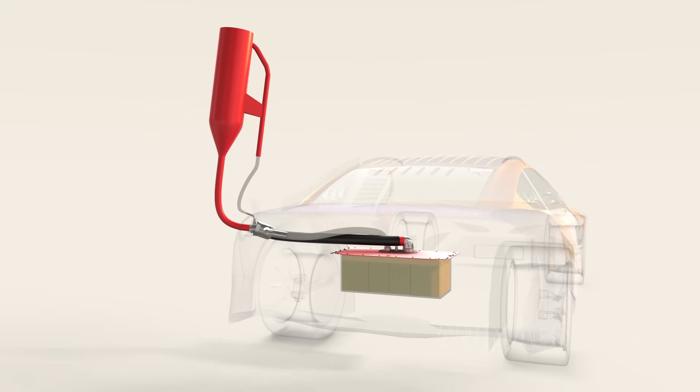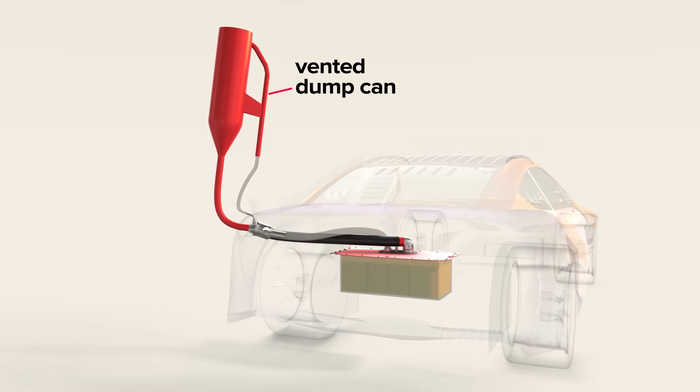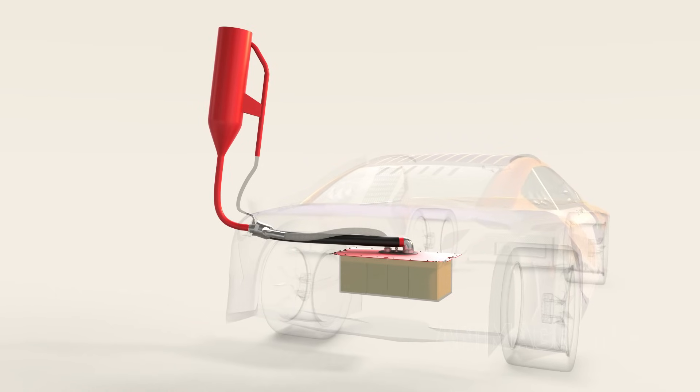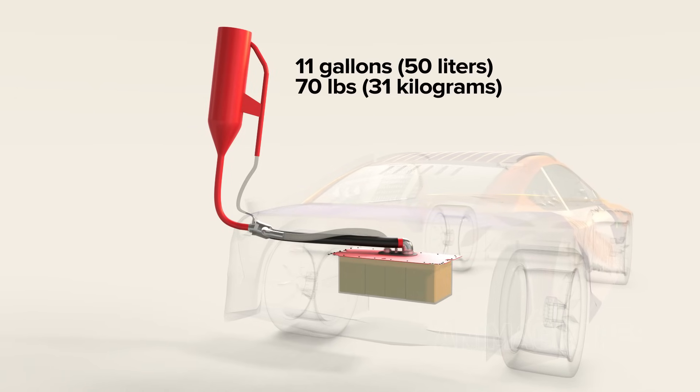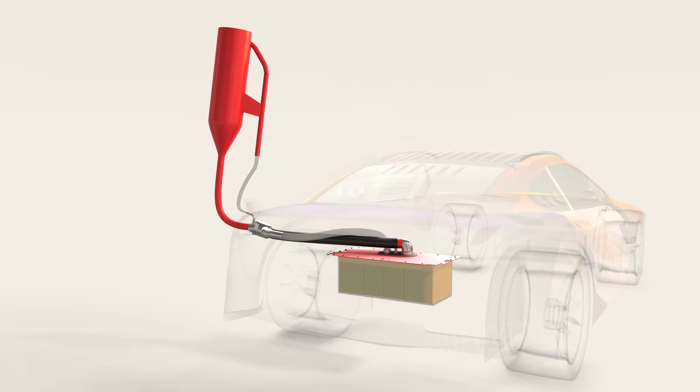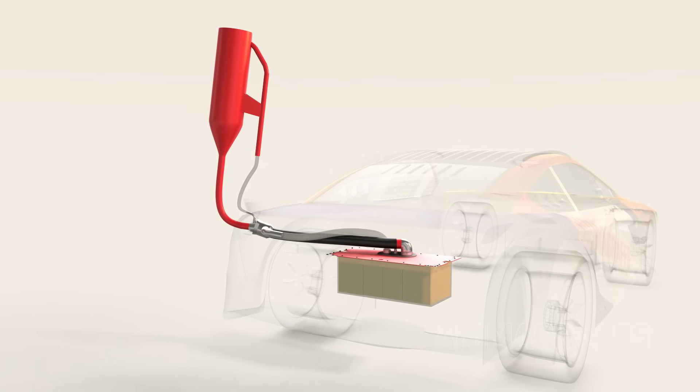Pit stop refueling is performed using a vented dump can that can hold up to 11 gallons of fuel and weigh almost 70 pounds. Two cans are used during a typical pit stop, and can be emptied in as little as 8 seconds each.